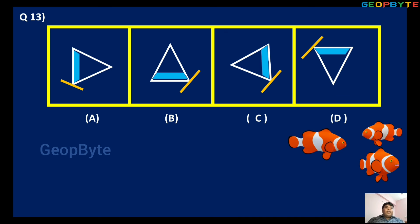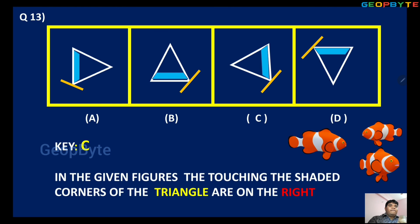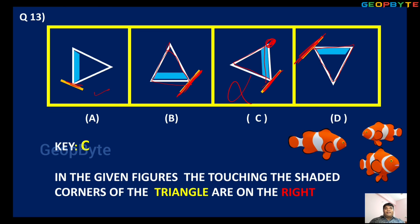Thirteenth question — observe. A, B, C, D — four options. In the figures, the shaded corners of the triangle are on the right side. In option A, the shaded corner is on the right side. In option B, the shaded corner is on the right side. In option C, the shaded corner should also be on the right side, but here it is touching the left side. So option C is the wrong — odd — answer. This type of question we have in Mental Ability, first topic. Got it?